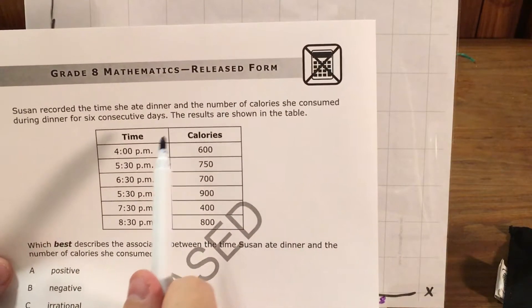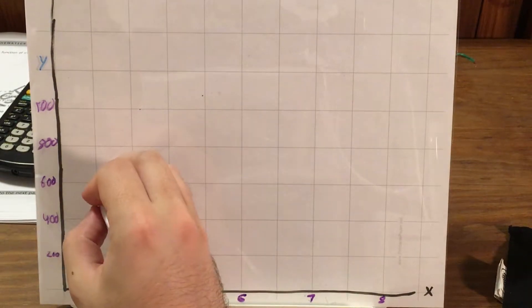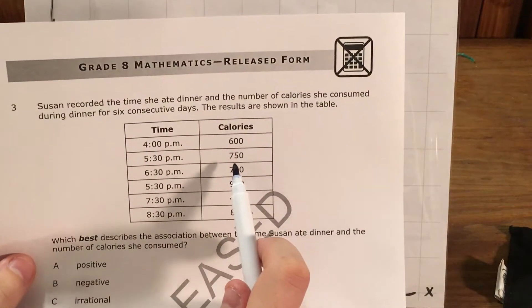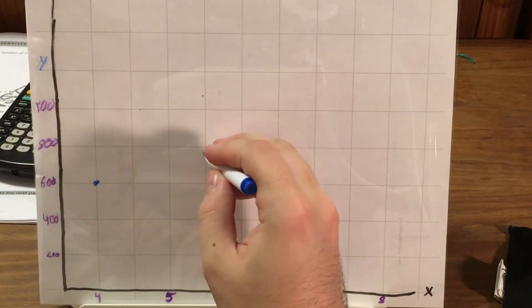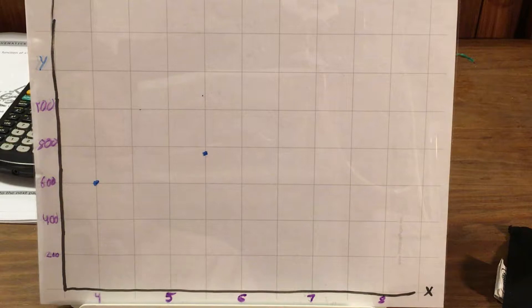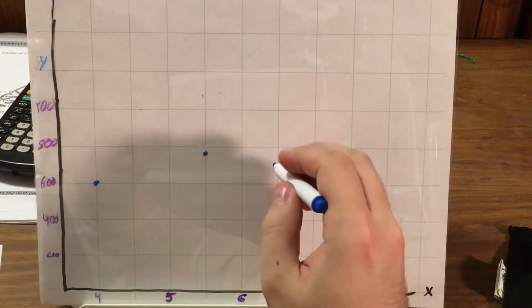First one, I've got 4 p.m., 600 calories. That would be 4 p.m., 600 calories right here. 5:30 p.m., 750 calories, so right between 5 and 6. And on the upper side of the 600 to 800 box, next is 6:30 p.m. and 700 calories.